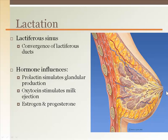Between the glandular tissue and the nipple on the outer surface are lactiferous sinuses, where the milk ducts converge. Milk production is stimulated by prolactin from the anterior pituitary gland, while milk ejection is stimulated by oxytocin from the posterior pituitary gland. Estrogen and progesterone have influences on breast development throughout a regular cycle. In general, estrogen serves to promote growth, while progesterone tends to temper estrogenic effects. The balance of estrogen and progesterone is an important part of overall female health.